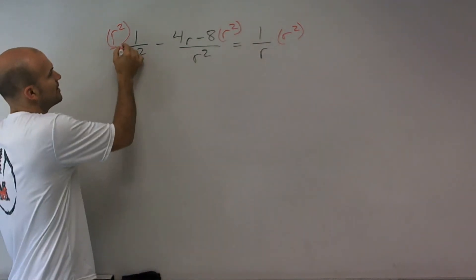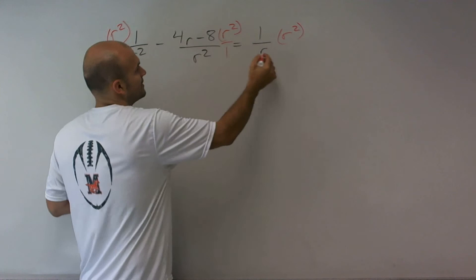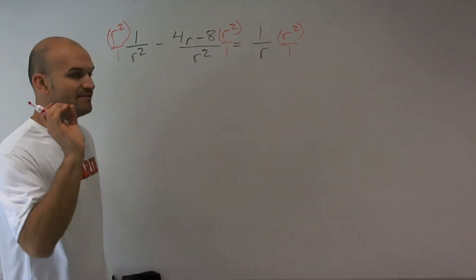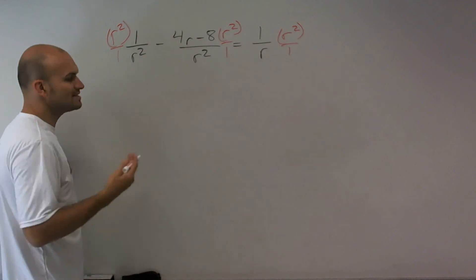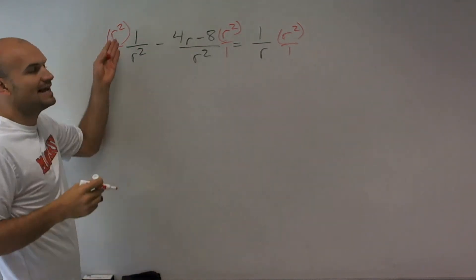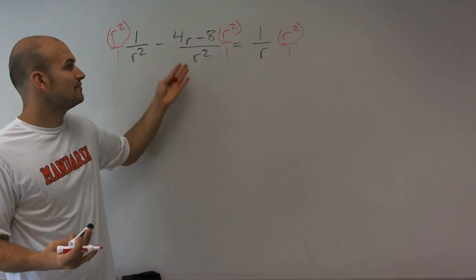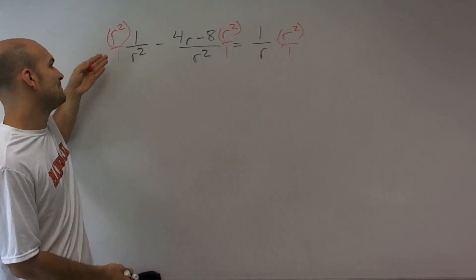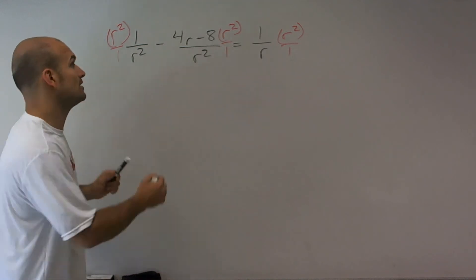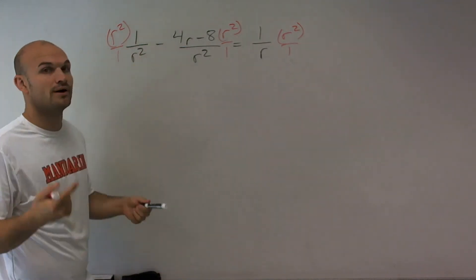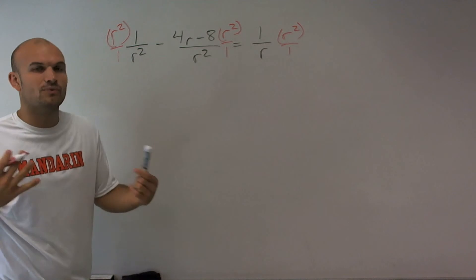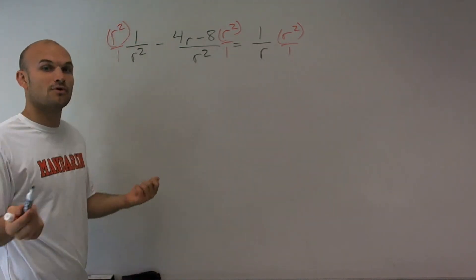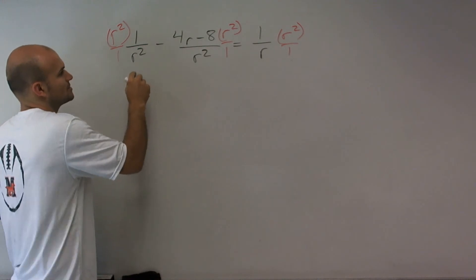Remember, I'm multiplying by r squared. We can write a little 1 under that to remind us that it's actually in the numerator, and that's going to be very important. The whole reason why we did this is so we can cancel out or get rid of our denominator, because r squared times 1 divided by 1 times r squared actually just goes to 1.